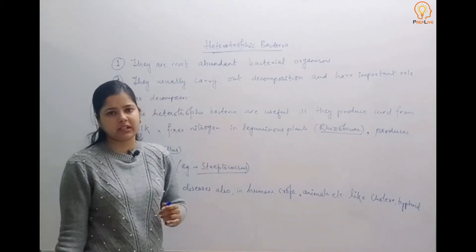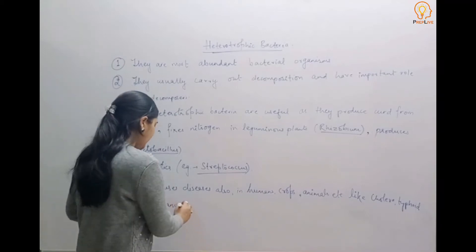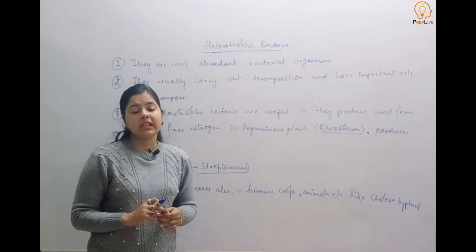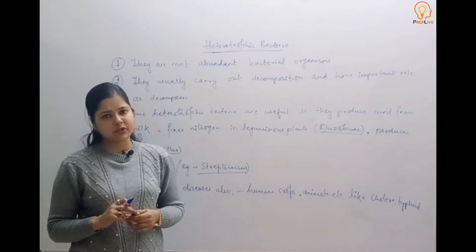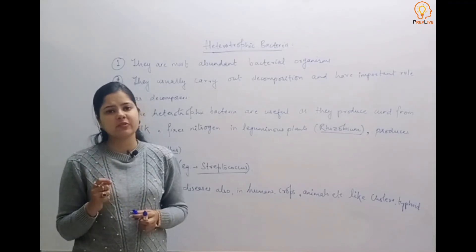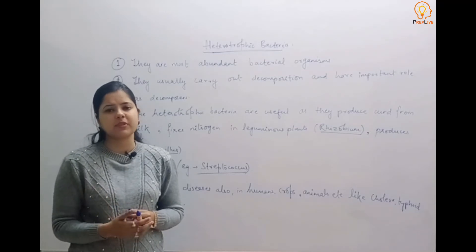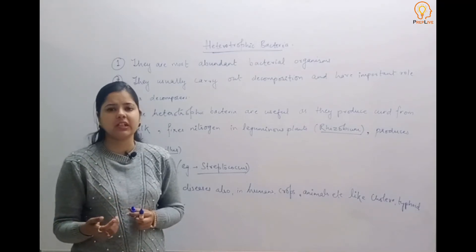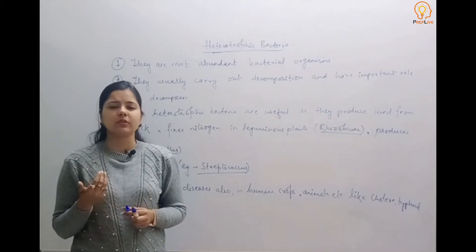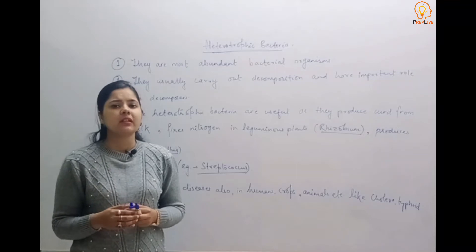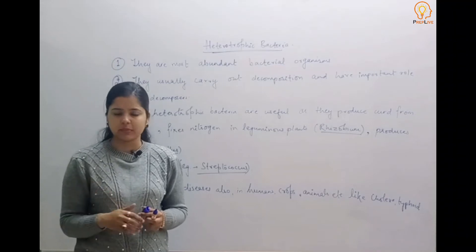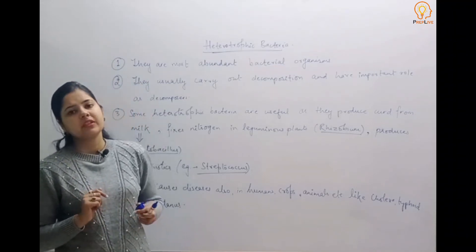This was about the last category of eubacteria: heterotrophic bacteria. When we talk about reproduction in bacteria, bacteria reproduce asexually by the process of binary fission — the bacterial cell splits into two daughter cells. When we talk about sexual reproduction in bacteria, it basically involves the transfer of DNA from one bacterium to another.